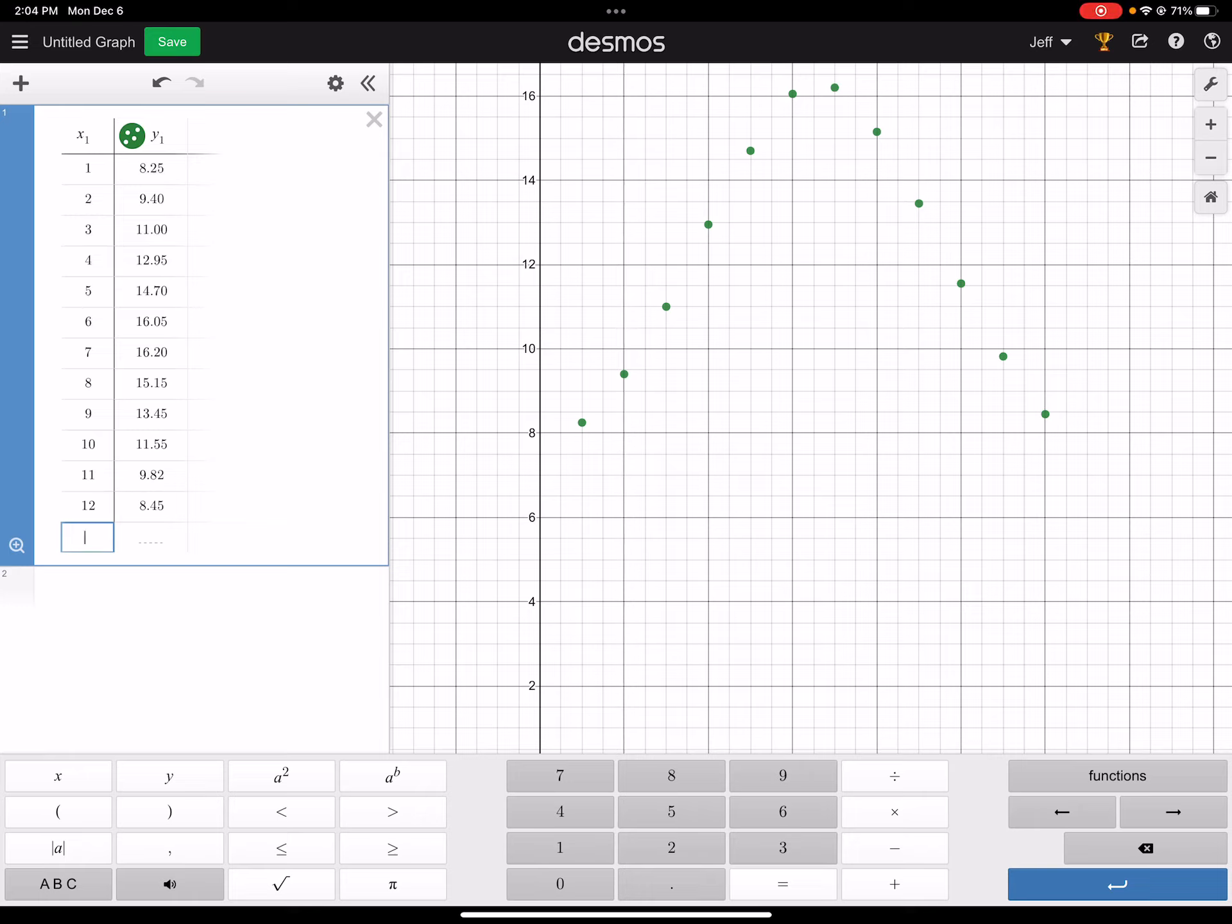All right, I just wanted to show you a little bit of how you could use Desmos to determine a function, a sine function for some data. So I've typed in some data here. I forget what all the numbers mean, whether it's hours of sunlight. I think it might be hours of sunlight, something like that.